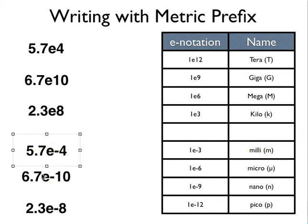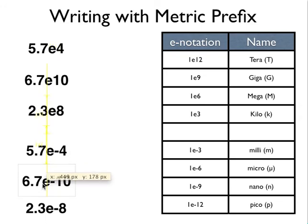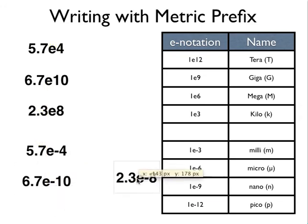Negative tenth would go between negative nine and negative twelve. You drop it down two spots. It becomes pico. It would be six hundred and seventy pico. Negative eight falls between negative six and negative nine. You'd have to drop it one spot. So this would become twenty-three nano.